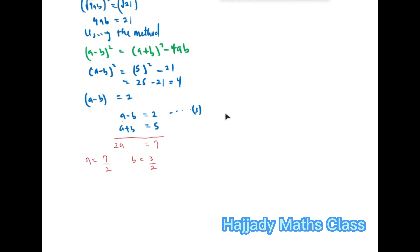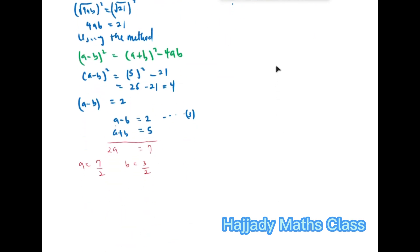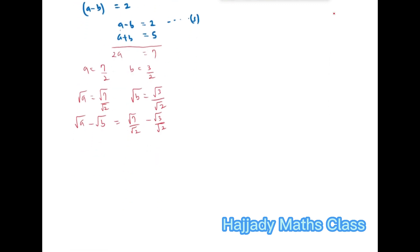And then don't forget that we are interested in √A - √B. This must be the same thing as √A - √B. So what we just need to do now is to get the roots of A and B. So square root of A is going to be √7/√2. So √A - √B is going to give us √7/√2 - √3/√2.